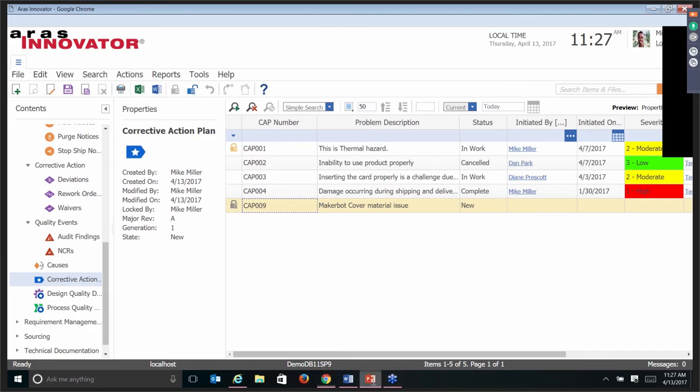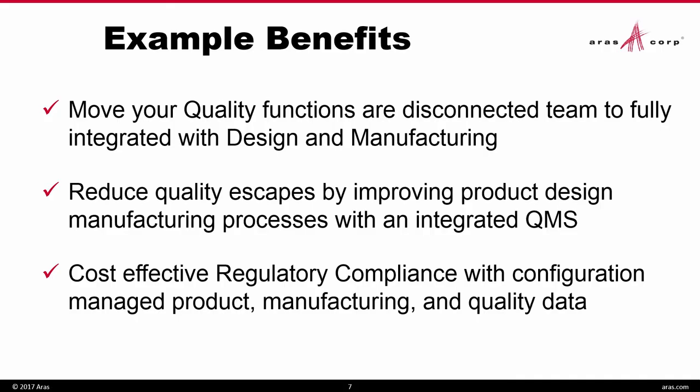A couple of benefits you could draw from this: if you're looking to move quality functions that are disconnected — you've got a team that isn't really connected with your manufacturing and design teams and you're seeing problems, trying to improve your business's quality — this can help address that. Capturing escapes: things that are getting out. With this closed loop, I can get back and improve my product design and manufacturing processes because we're all integrated. Regulatory compliance is a big deal for a lot of firms — now you've got all of that inside a configuration managed system. All of your product data, your CAD, documents, bill of materials, manufacturing, process plans, and all of the quality data and documents you saw today are all configuration managed together.